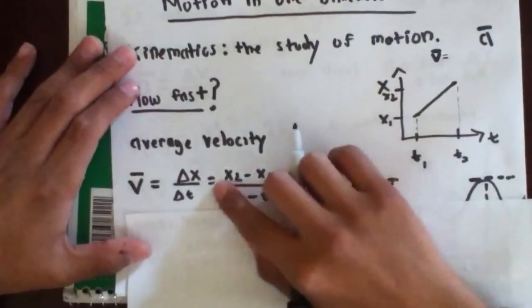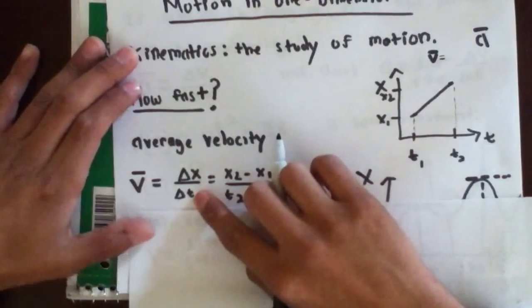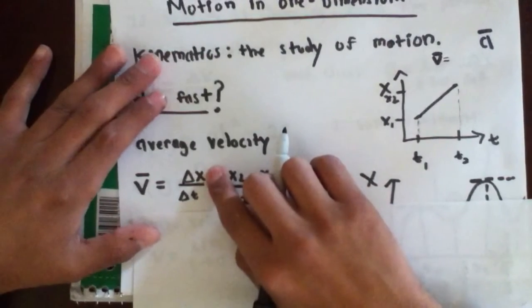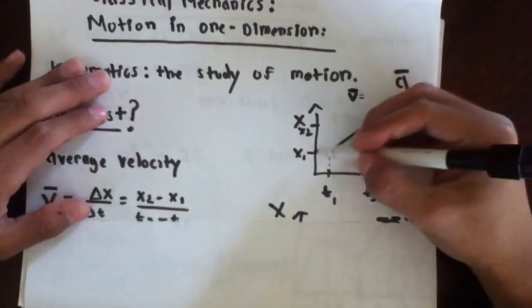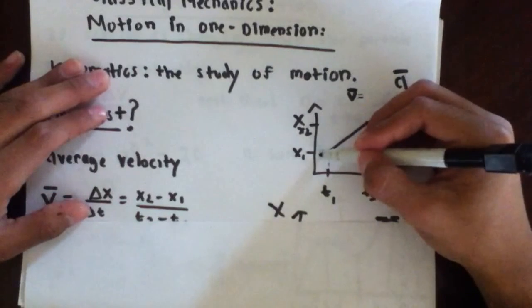Okay, so by definition, I have already told you that average velocity is change in position over change in time. Let's deal with the numerator of this fraction. So, as we can see, at t1, our position is x1,